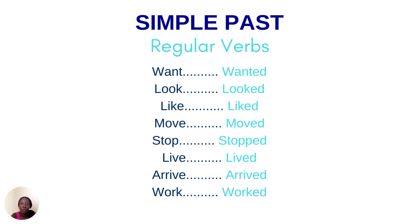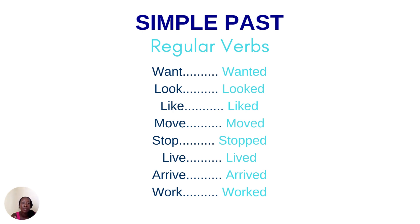We have 'want', which goes into 'wanted'. 'Look' to 'looked' — not 'looked'. A lot of people say 'looked', that's the wrong pronunciation. So 'look' to 'looked'. 'Like' to 'liked'. 'Move' to 'moved'. 'Stop' to 'stopped'. 'Live' to 'lived'. 'Arrive' to 'arrived'. And 'work' to 'worked'. So it's good to practice the pronunciation of the simple past because a lot of times people tend to pronounce the -ed at the end, and it's wrong. Those are some regular verbs and just some examples.